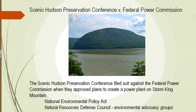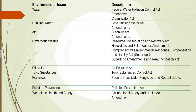Many groups banded together to form national organizations. All of the issues listed here show what Congress did to combat environmental problems. For water, they developed the Federal Water Pollution Control Act, the Clean Water Act, and the Safe Drinking Water Act — all to ensure humans had safe water. For oil spills, the Oil Pollution Act was enacted.